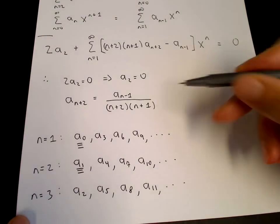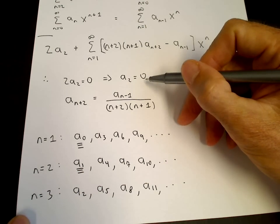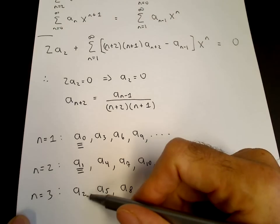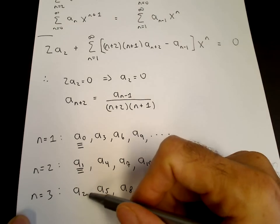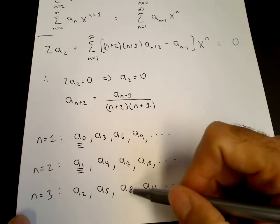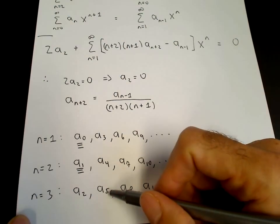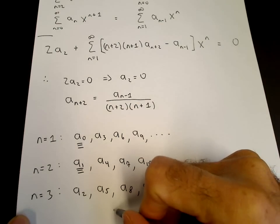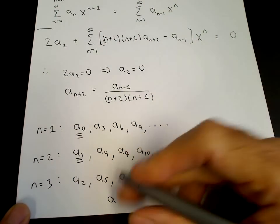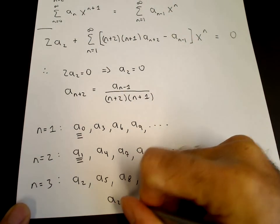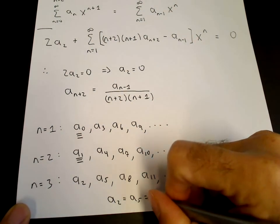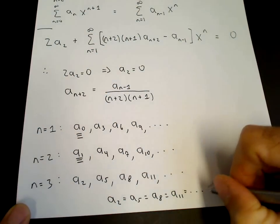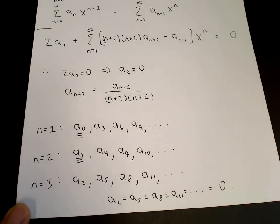One of our conditions is a₂ equals zero. Since a five equals a constant times a two, and a eight equals a constant times a five, and so on, if a₂ equals zero then immediately a₂ equals a five equals a eight equals a eleven — all of these coefficients are zero. That takes care of the third sequence.